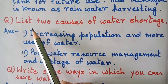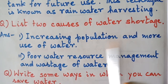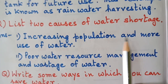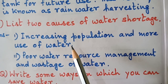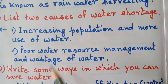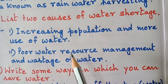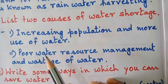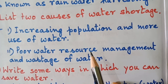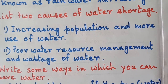The next question deals with causes of water shortage. First point: increasing population and more use of water. Day by day the population is increasing and the demand for water is also increasing, that's why we are facing a shortage of water. Second point: poor water resource management and wastage of water. Old water resources like stepwells and lakes are not managed or preserved properly nowadays.